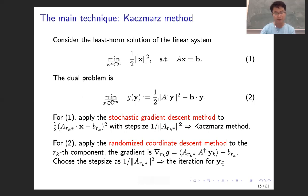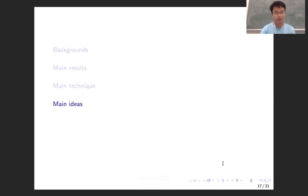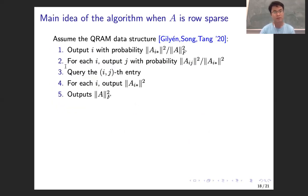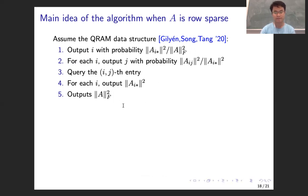Now I will introduce the main ideas of the quantum inspired algorithms. This is a brief description of the Q-RAM data structure, and this one comes from a specific paper. With this Q-RAM, we can do a lot of things with matrix A — for instance, we can sample rows, and for each row index i we can sample columns. We can also query entries and have information about norms. Maybe it's not easy to build such a data structure, but let's just assume we have it.